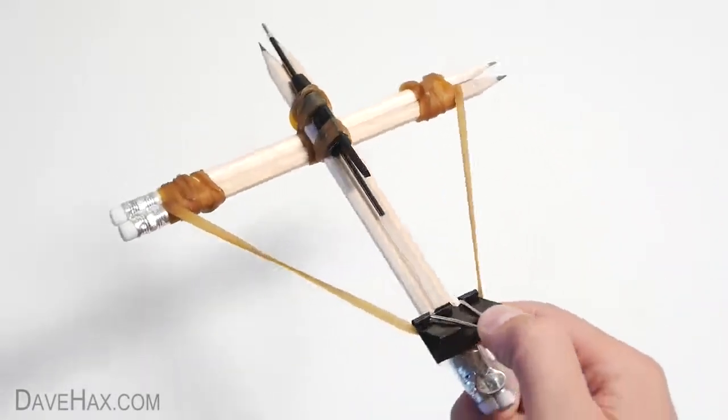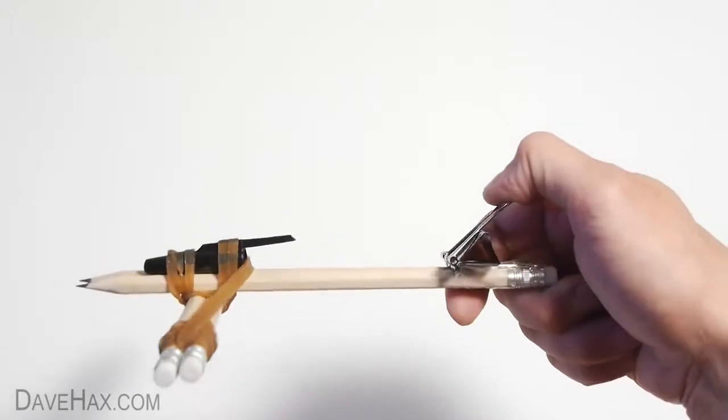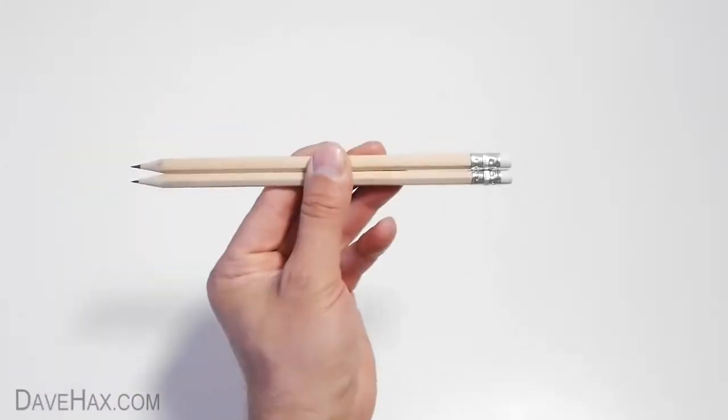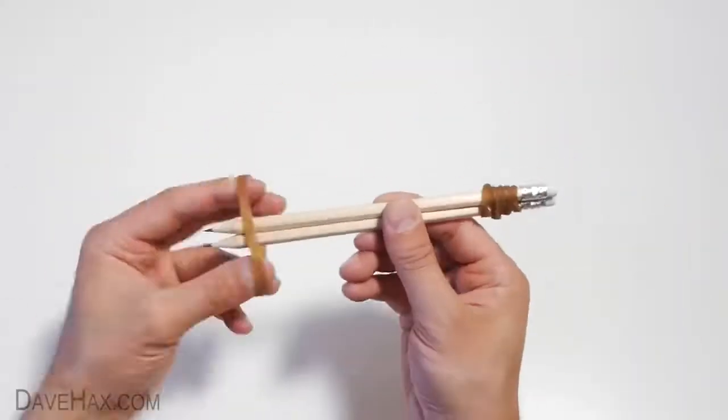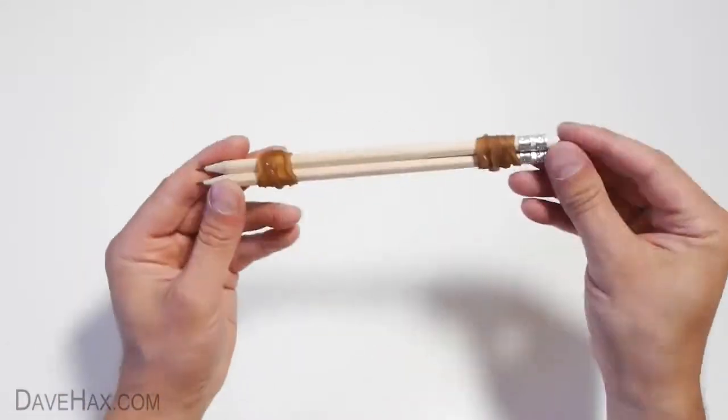Today I'm going to show you how to make a crossbow out of office supplies. Start by taking two pencils and hold them together using two strong elastic bands. It should look like this.